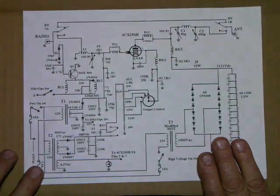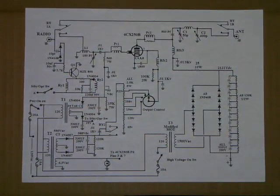And this is the amplifier we're going to build. That's the complete schematic: key in circuit, bias supply, screen supply, filament, and high voltage. All right there. That's it.